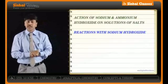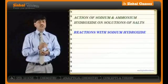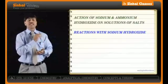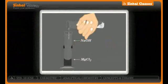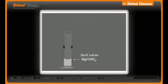Now let us consider certain salt solutions and see the effect of sodium hydroxide on them. For example, magnesium chloride (MgCl₂) treated with sodium hydroxide will give sodium chloride and magnesium hydroxide. Magnesium hydroxide is a precipitate — indicated by a downward arrow — which forms a dull white precipitate that is insoluble in excess sodium hydroxide.